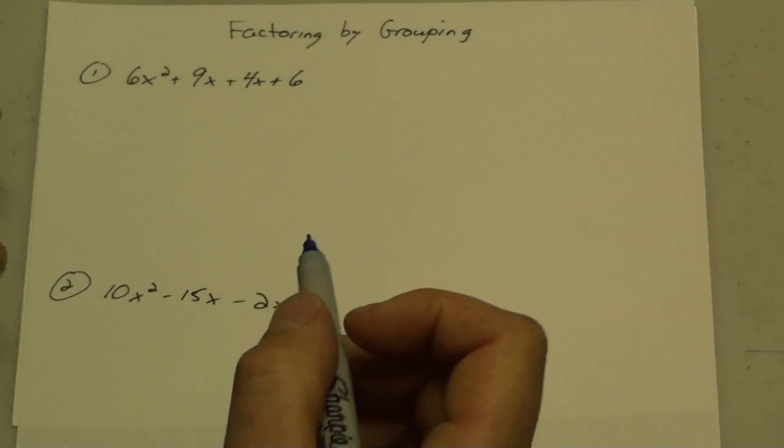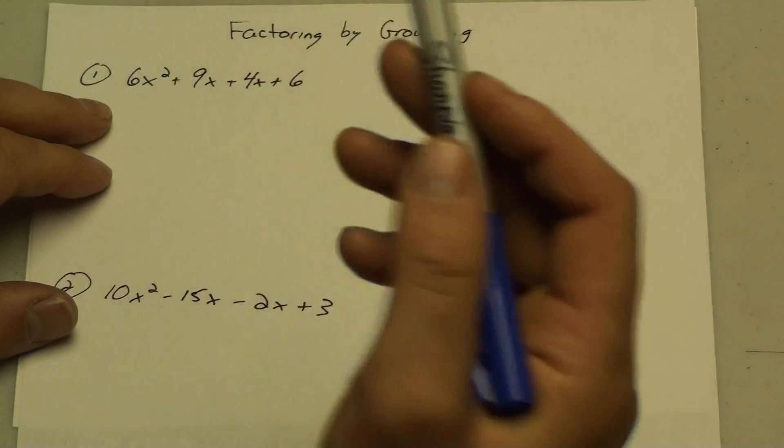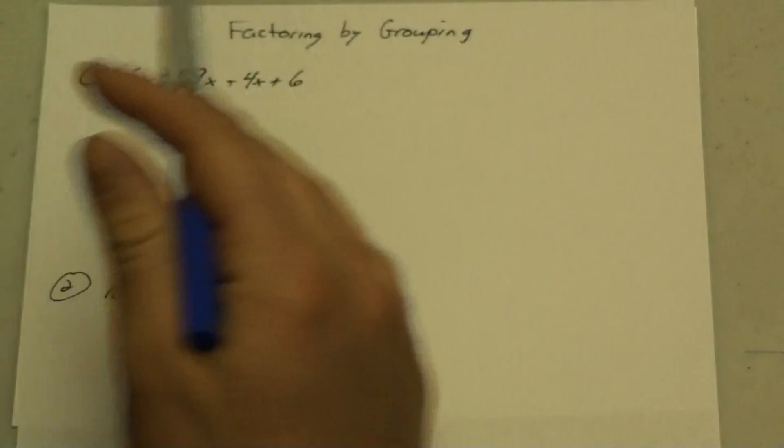Okay, this is a short lesson on factoring by grouping. In factoring by grouping you're going to have an even number of terms, usually four, kind of your minimum, then you have six or eight terms, whatever.